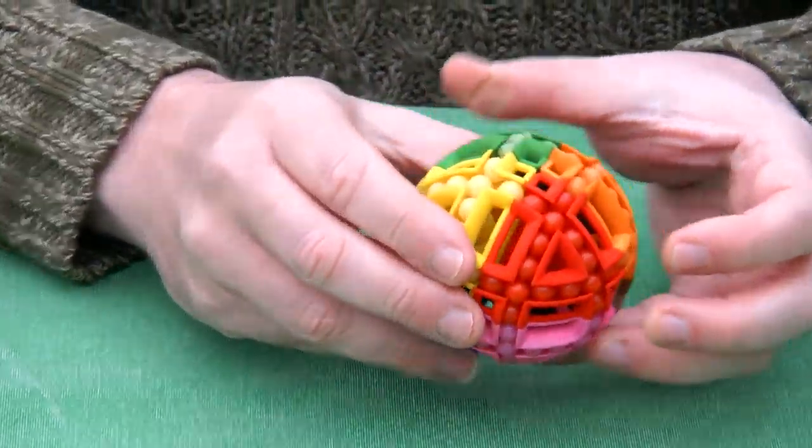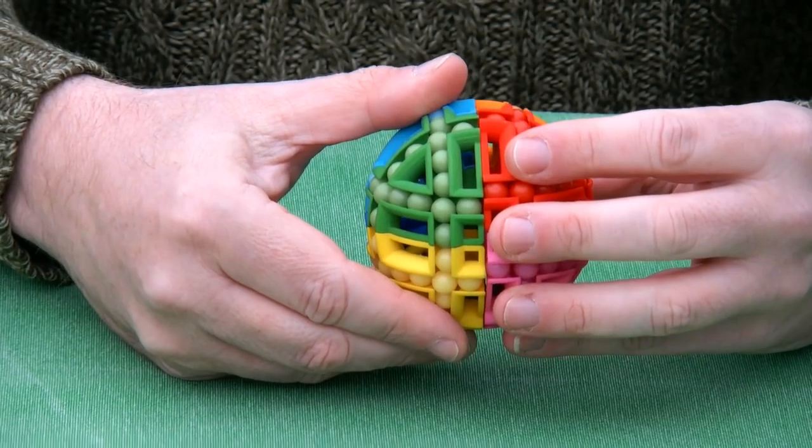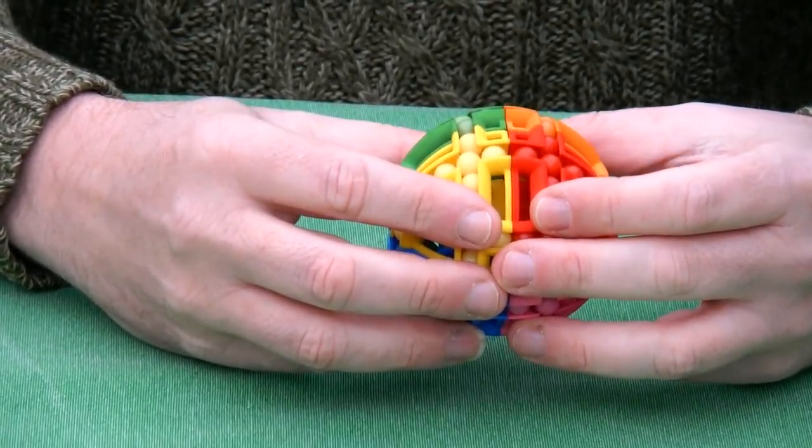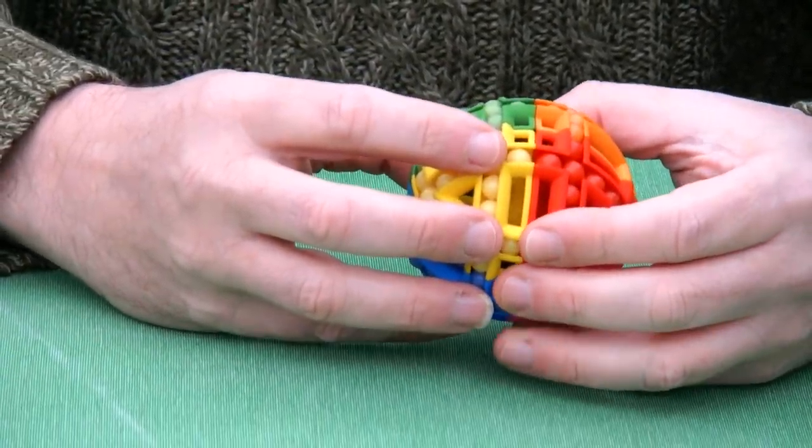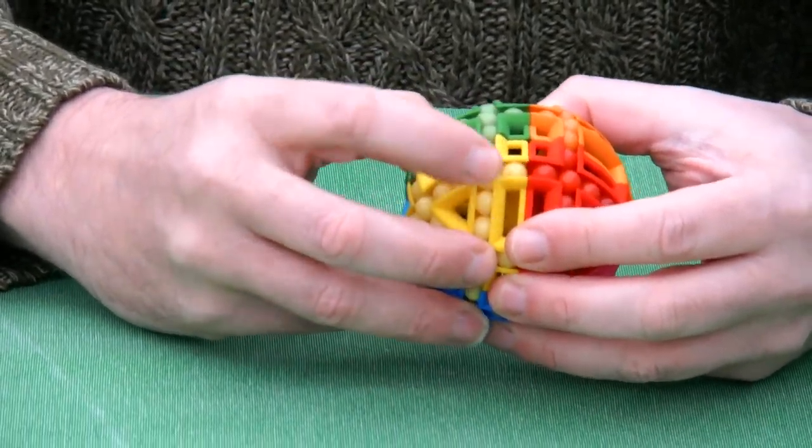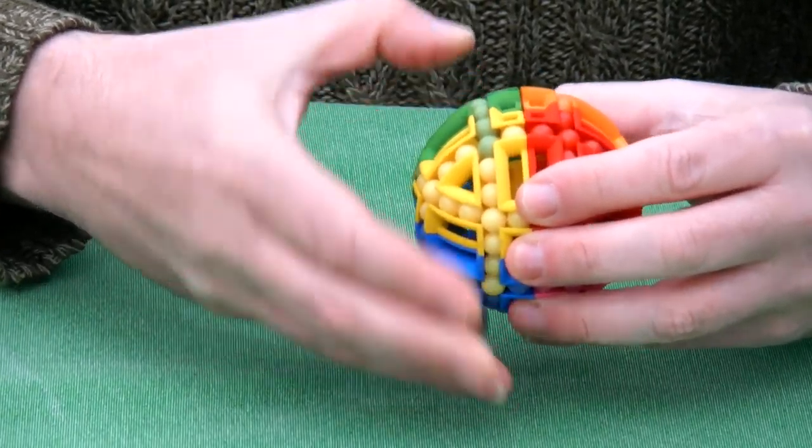The yellow segment has yellow beads. Other than twisting this puzzle like a 2x2 Rubik's cube, which actually doesn't scramble it, you can also move the beads around like this.